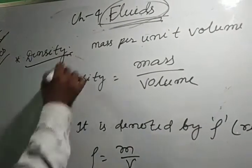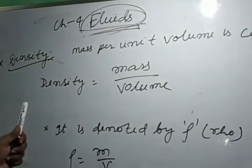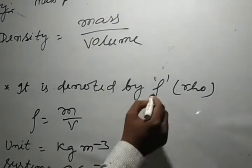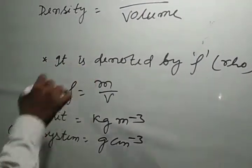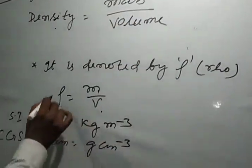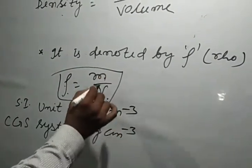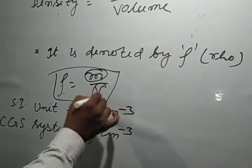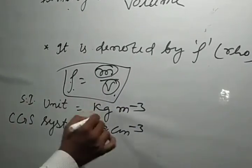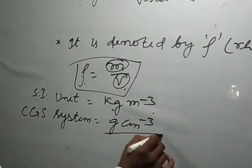Now let us discuss density. Mass per unit volume is called density. Density equals mass divided by volume, denoted by rho: ρ = M/V. The SI unit of density is kg per meter cube. In the CGS system, the unit of density is gram per centimeter cube.